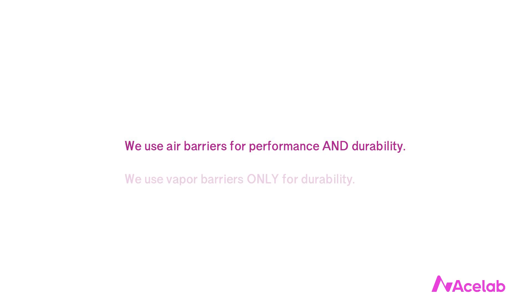Vapor control is different. The only reason to care about vapor control is building durability — protecting the materials we build with from moisture damage, usually related to condensation. That's it. There is no efficiency or comfort component to vapor control. We use vapor barriers for the sole purpose of protecting other building materials from moisture damage. I'd like to highlight this distinction up front: we use air barriers for performance and durability; we use vapor barriers only for durability.